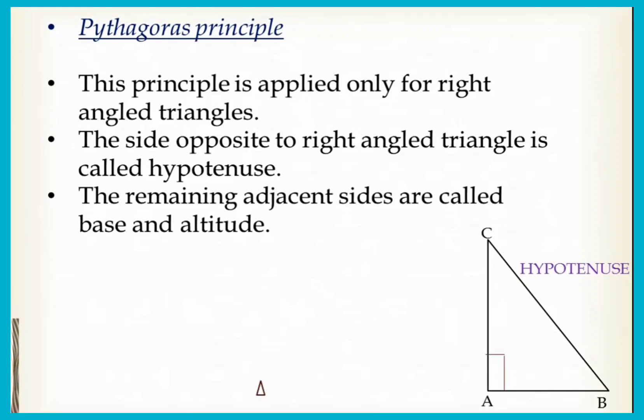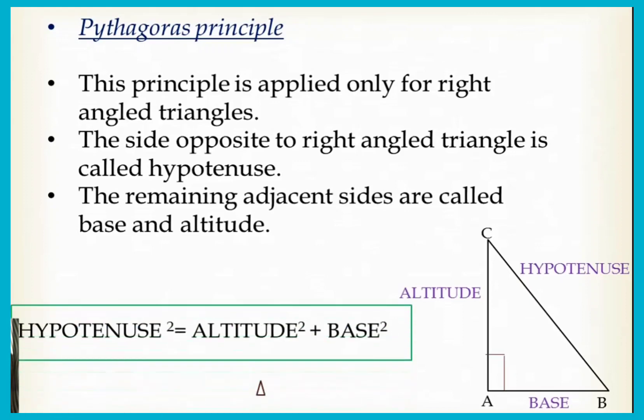The remaining sides AC is named as altitude and AB is named as base. Then according to the Pythagorean principle, hypotenuse squared is equal to altitude squared plus base squared. According to the given triangle, BC² = AC² + AB².